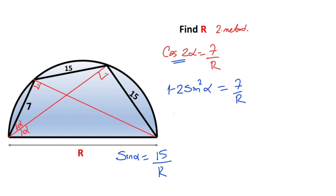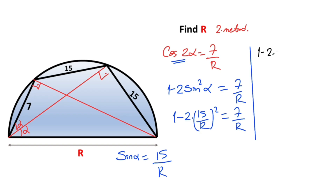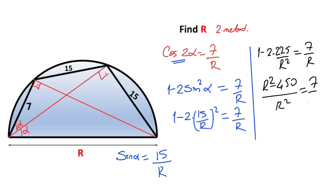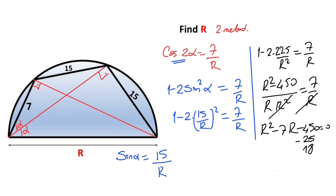Plugging in: 1 minus 2 times (15 over r) squared equals 7 over r. So 1 minus 2 times 225 over r squared equals 7 over r, which gives r squared minus 450 over r squared equals 7 over r. Simplifying: r squared minus 7r minus 450 equals zero — the same equation as before. Factoring: (r minus 25)(r plus 18) equals zero, therefore r equals 25 units.